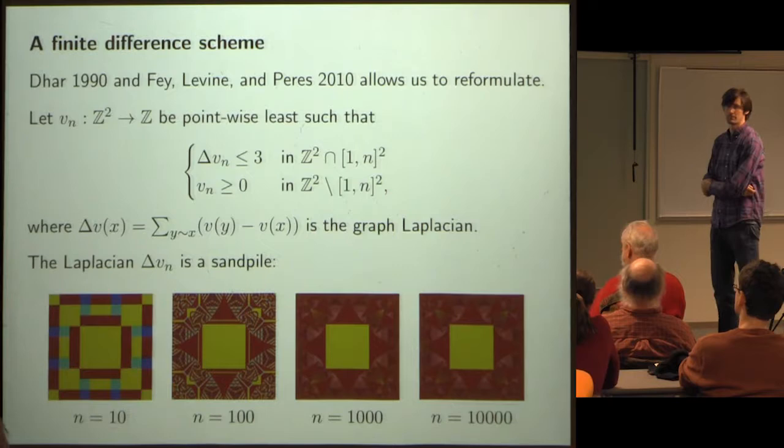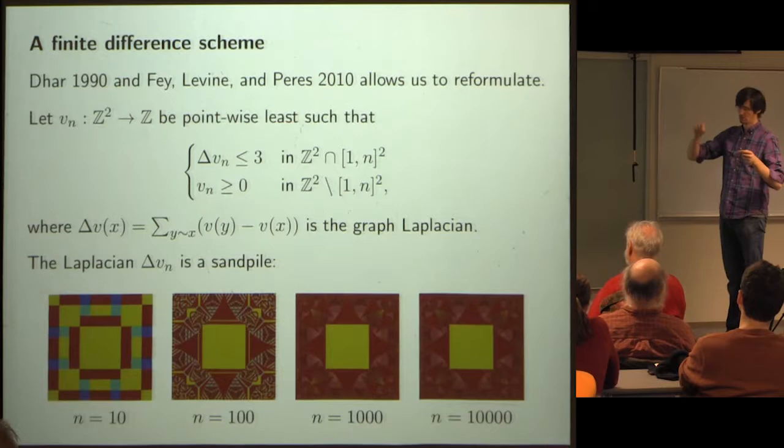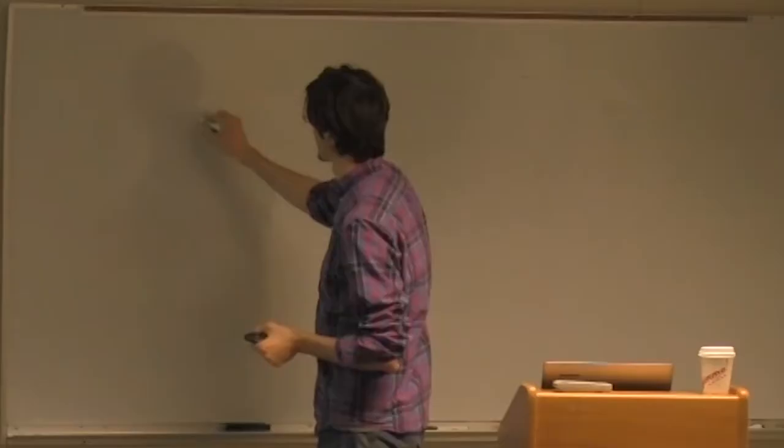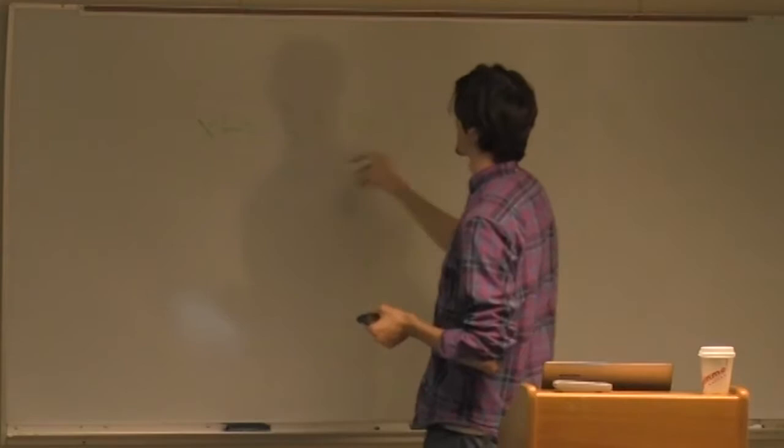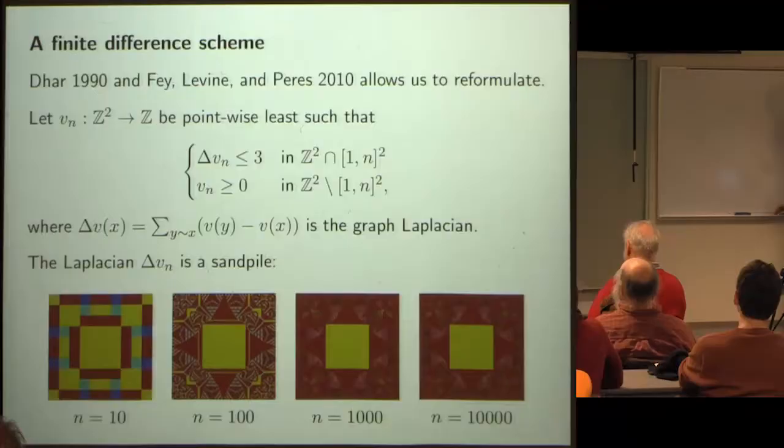An audience member asks: what if you did this on a line? In one dimension it's very boring, because this function would just be integer-valued with graph Laplacian identically one — the answer is just solid ones.